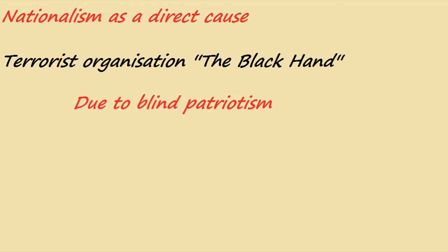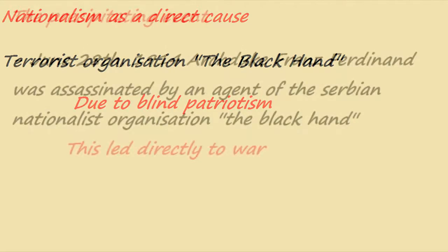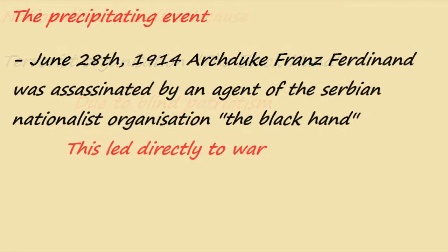Serbia made this terrorist organization called the Black Hand, which was a result of blind patriotism, and blind patriotism is a result of unrestrained nationalism. This can be placed as a direct cause of the war, because it led to the final cause — the precipitating event: on June 28th, 1914, Archduke Franz Ferdinand, the heir to the Austria-Hungary Empire, was assassinated by an agent from the Black Hand organization. This is the immediate cause of the war.